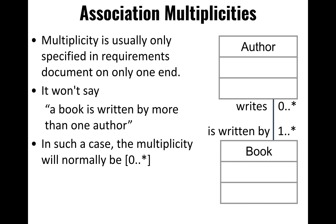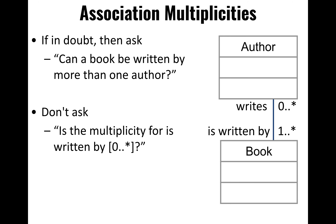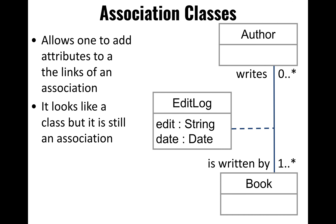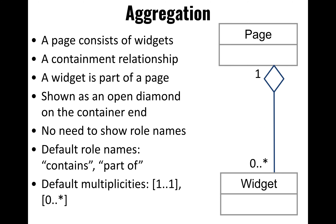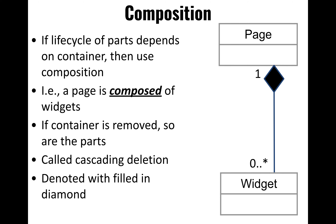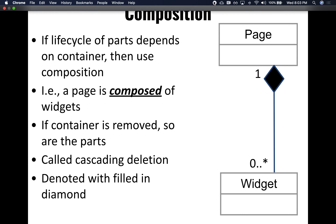Association classes allow us to relate many authors with many books, and record a history of all the edits that a particular author has done on a particular book. We also have aggregation, represented with an open diamond, and composition, represented with a closed diamond — both of which we already discussed. That's the formal description of class diagrams.